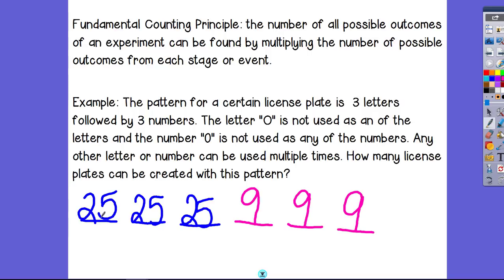So it's like I have 25 possibilities for the first spot, 25 possibilities for the second spot, 25 possibilities for the third spot, nine possibilities for the fourth spot, nine possibilities for what could go in the fifth spot, nine possibilities for what could go in the sixth spot.